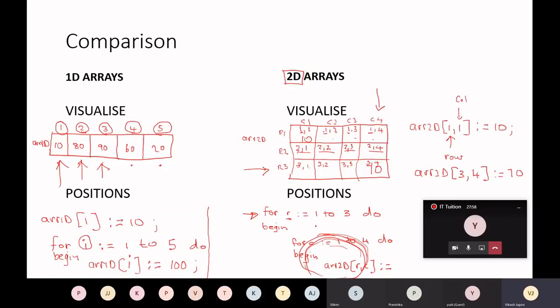So what's critical to understand? Just the way with the 1D array, our rule was, you need, if you want to go to each cell in the 1D array, use a single for loop.